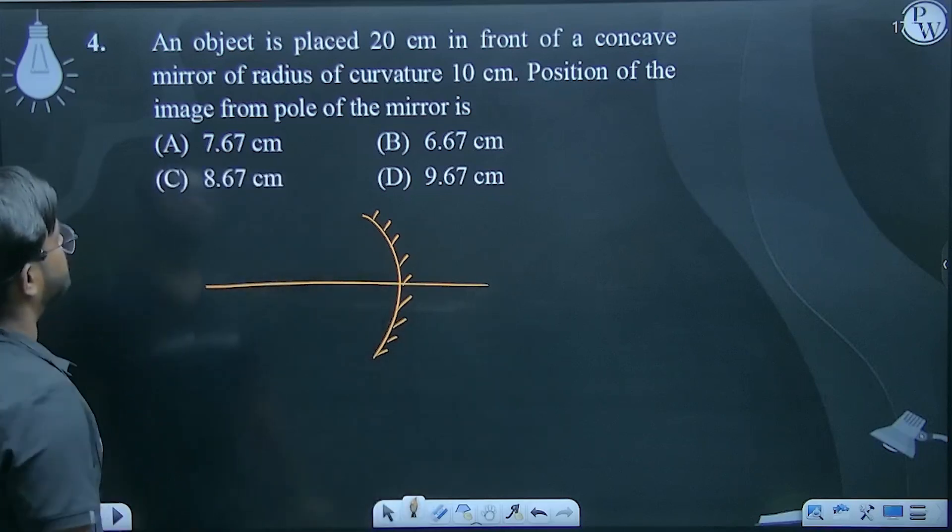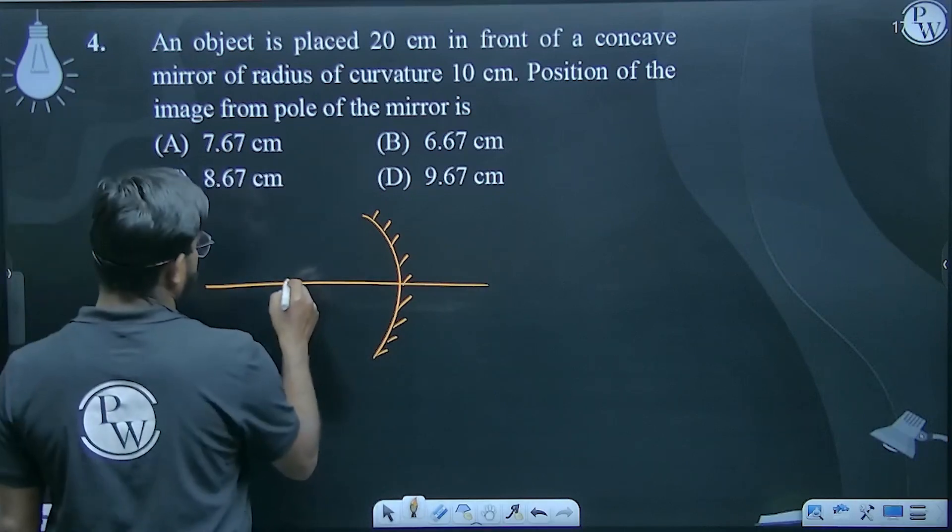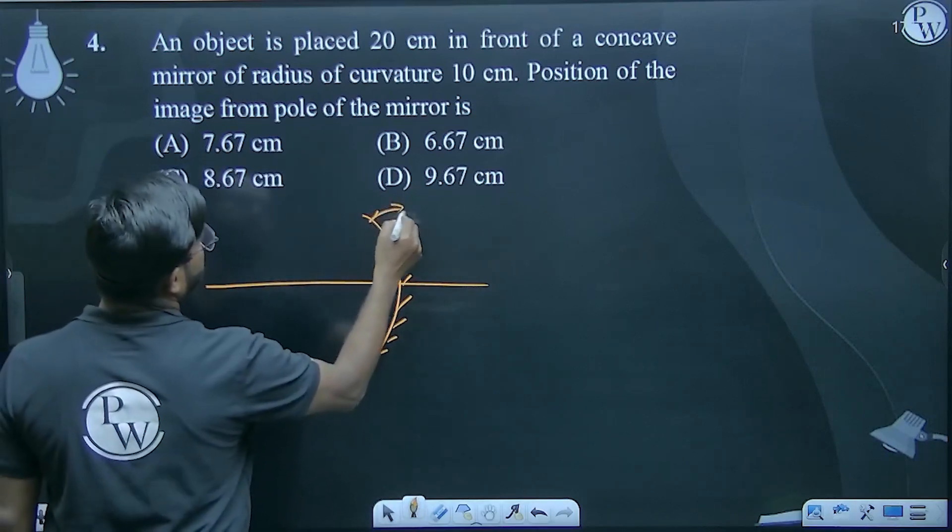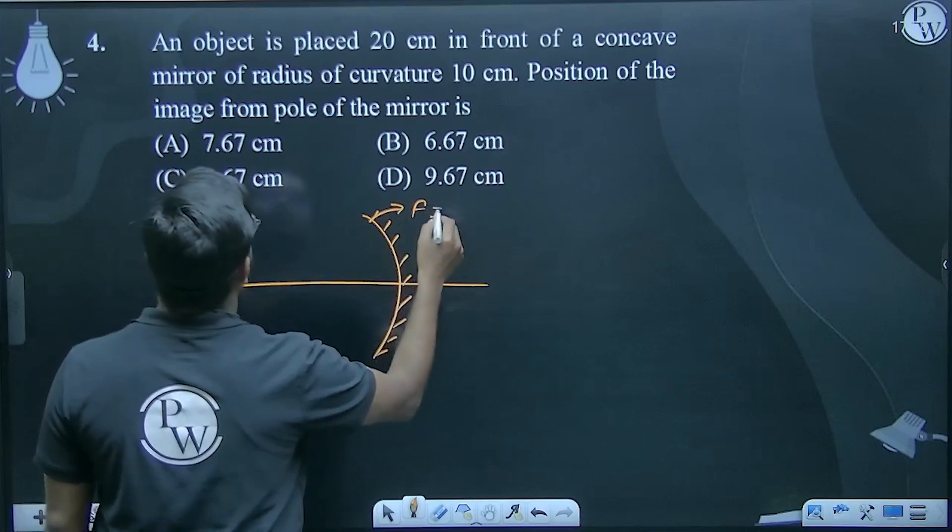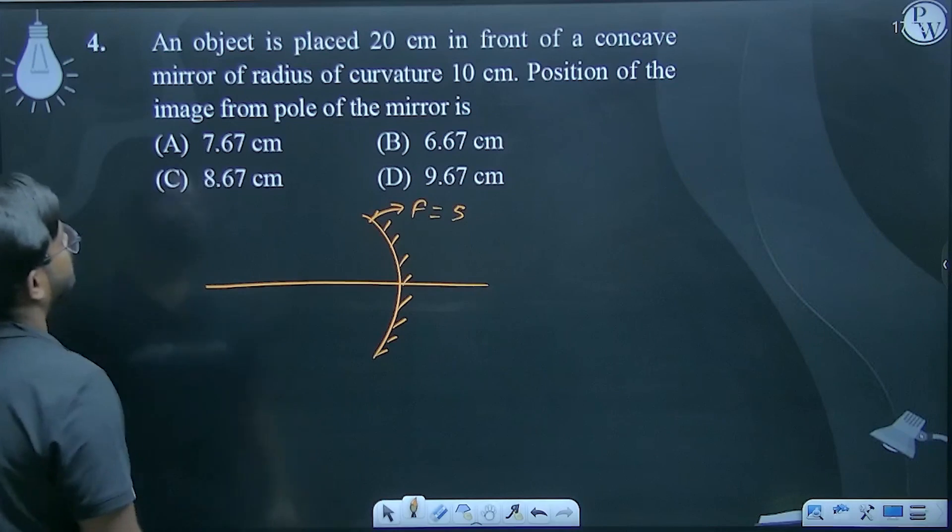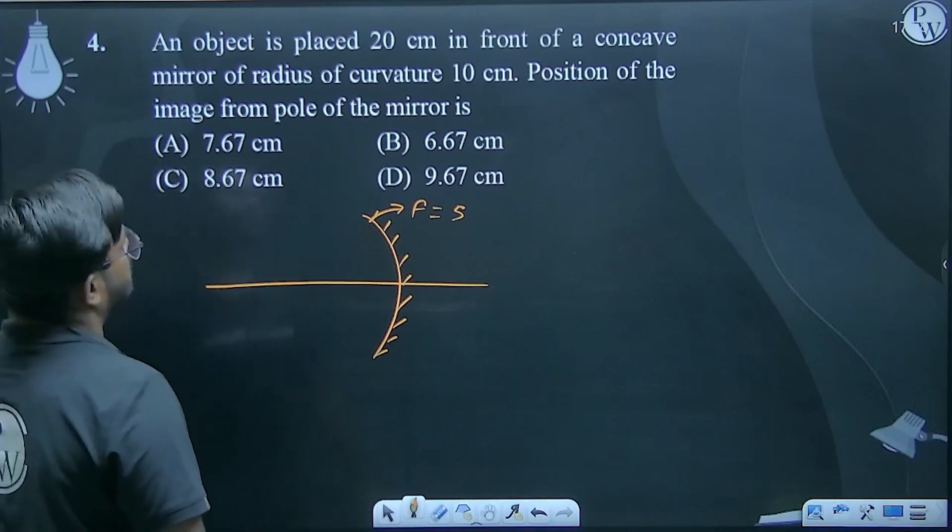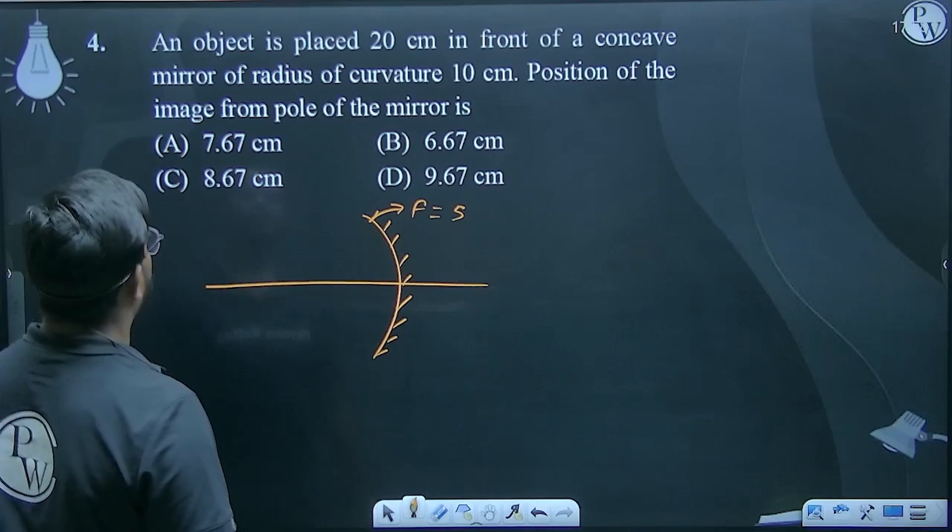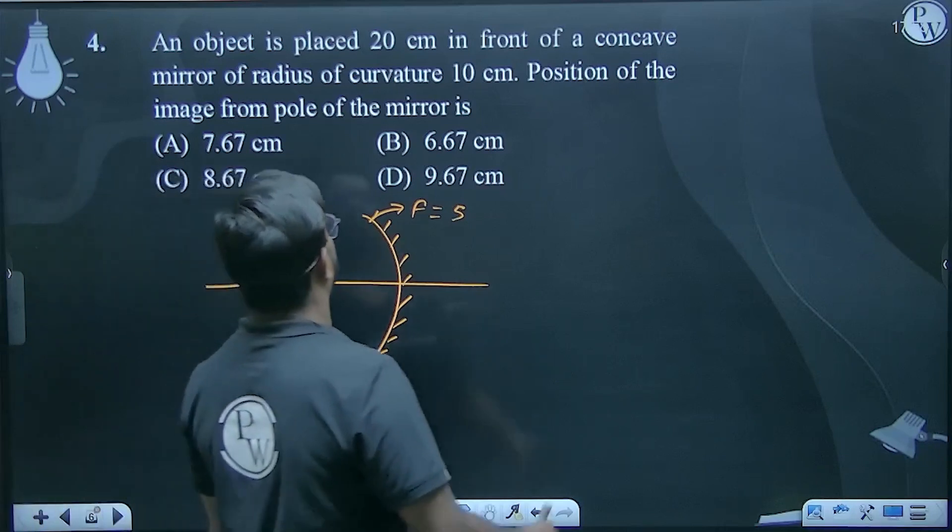An object is placed 20 cm in front of a concave mirror. We need to find the position of the image from the pole of the mirror.